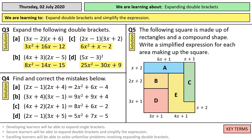Question four: find and correct the mistakes below. In question A, you should have spotted that 2x times 2x should give you 4x squared, not 2x squared. In question B, positive 4 multiplied by negative 1 should give you negative 4, not positive 4. In C, your 4x plus 4x should give you 8x, not 6x. And then in D, 2x times 3x is 6x squared, not 5x squared — you'd be surprised how many people make that mistake quite regularly.